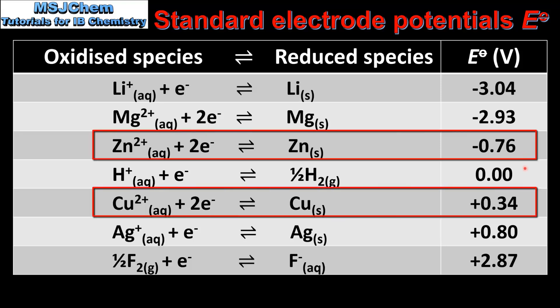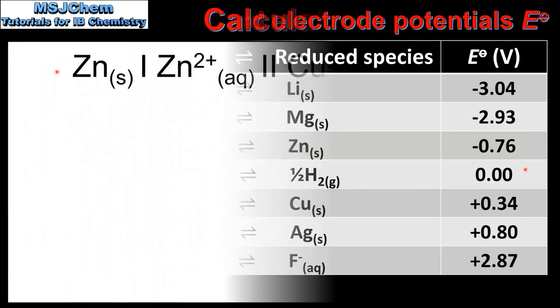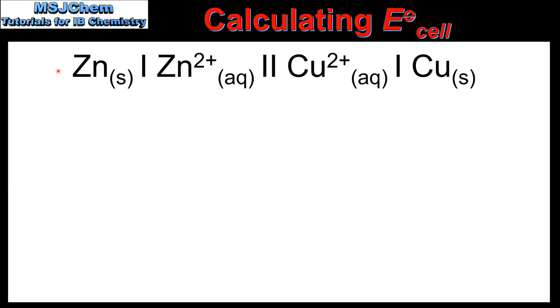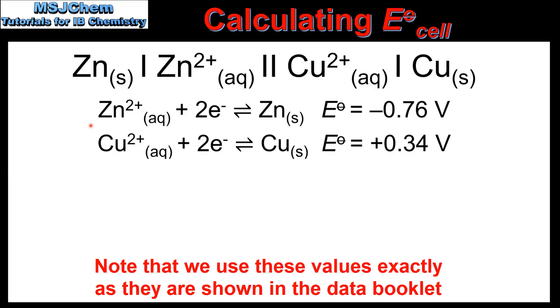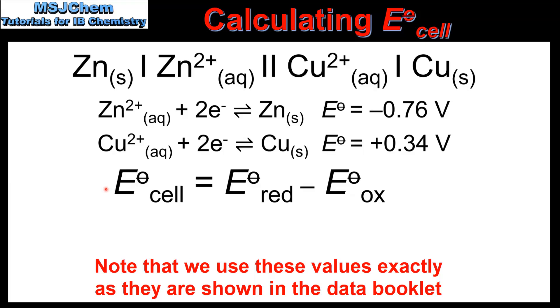For example, if a voltaic cell is made with a zinc half cell and a copper half cell, the zinc half cell will be the anode and the copper half cell will be the cathode. So next we look at how to use these values to calculate the cell potential. In our first example, we'll calculate the cell potential for this voltaic cell, and here we have the standard electropotential values of the zinc half cell and the copper half cell. We then input the values into this equation.